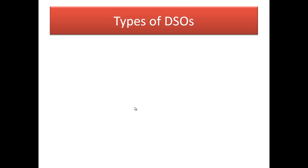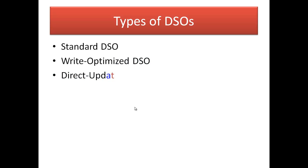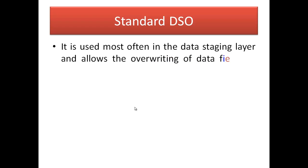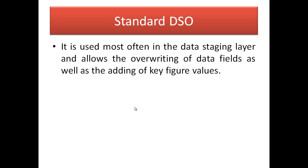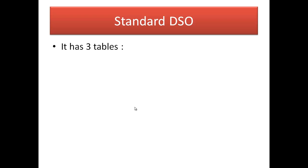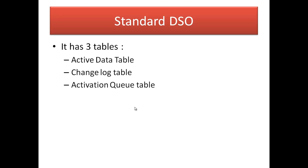There are three types of DSOs: Standard DSO, Write-Optimized DSO, and Direct-Update DSO. The Standard DSO is used most often in the data staging layer and allows overwriting of data fields as well as adding of key figure values. Data from a Standard DSO can be loaded to another DSO or to an InfoCube. It has three tables: the active data table, the change log table, and the activation queue table.